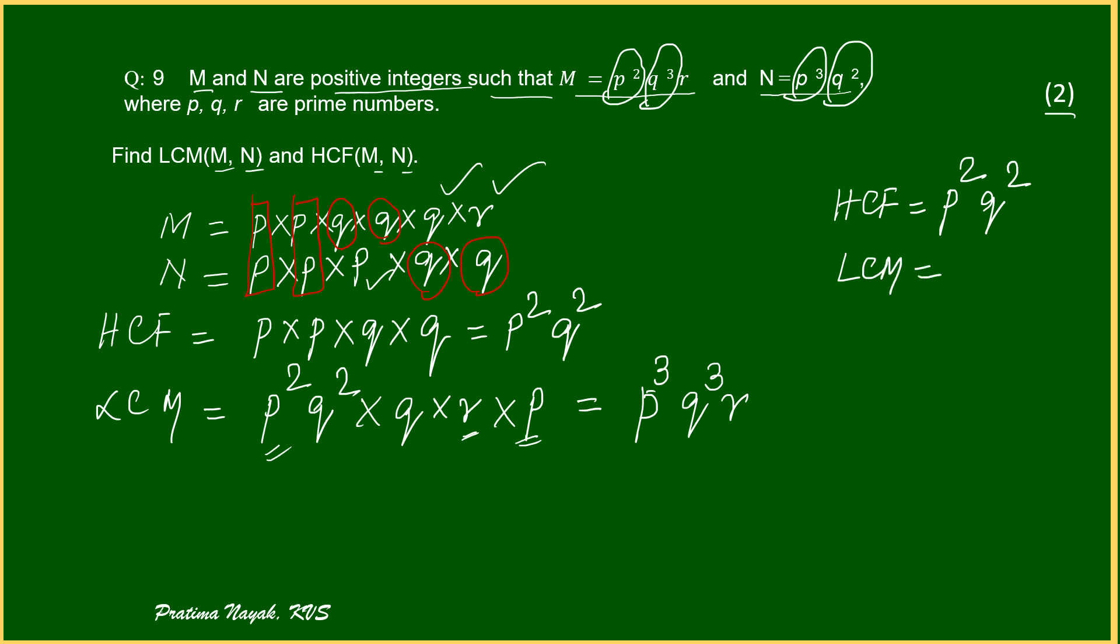For LCM, what you will do? Compare p, compare q. Take the maximum power. So, here p square, here is p cube. Take p cube. Similarly, first one is q cube, q square, take q cube. And of course, what is extra? Extra is r. So, that will be here. This is LCM.